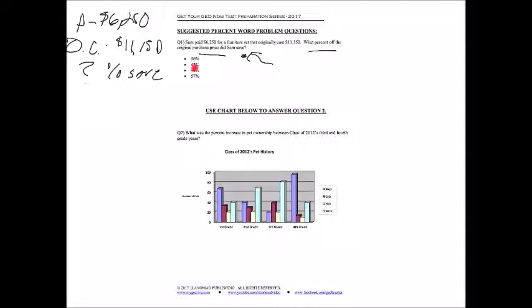Okay, so now we have the data from the problem. And then, of course, here we have our possible answers. Okay, so now we have to look at, we know that he paid $6,250. The original cost was $11,150. And the question is, what percent did he save?